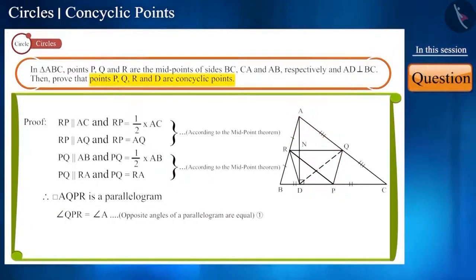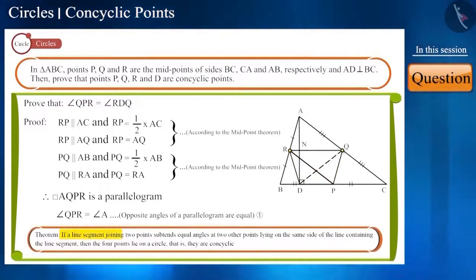Friends, we have to prove that points P, Q, R and D are concyclic points. If we prove that angle QPR and angle RDQ are equal, then we know that if a line segment joining two points subtends equal angles at two other points lying on the same side of the line containing the line segment, then the four points lie on a circle, that is, they are concyclic.